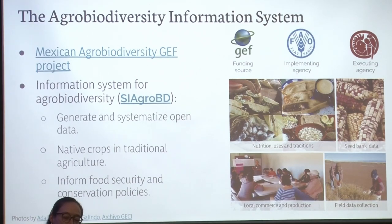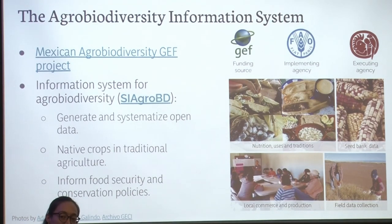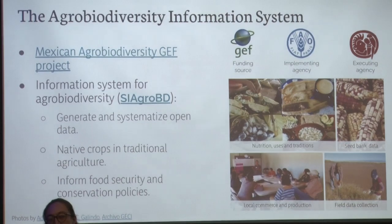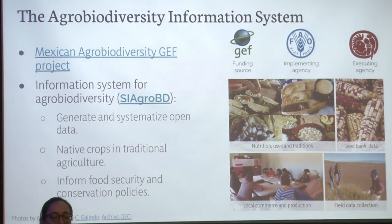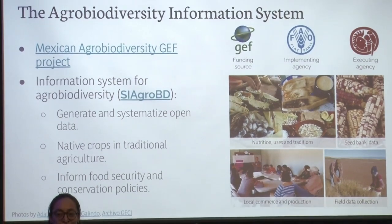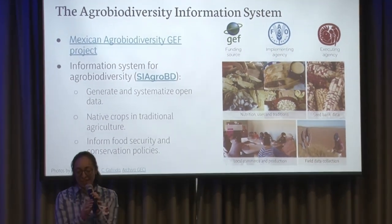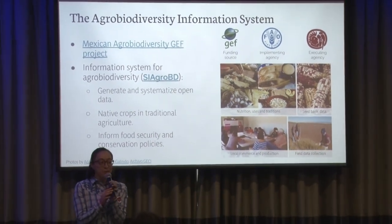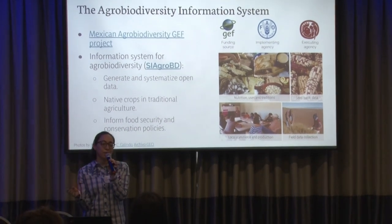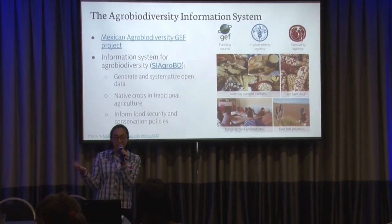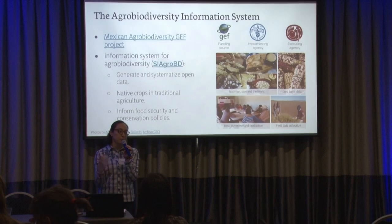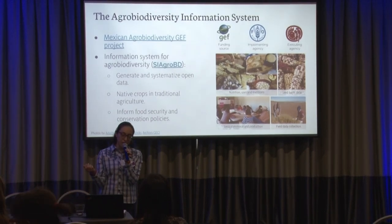What we do in Siagro is to generate and systematize open data related to native plants that are cultivated in traditional agriculture — for example, maize, beans, cacao, avocado, and among other delicious Mexican plants — and our ultimate objective is not just to have or to publish open and fair data. We also want to inform food security and conservation policies.